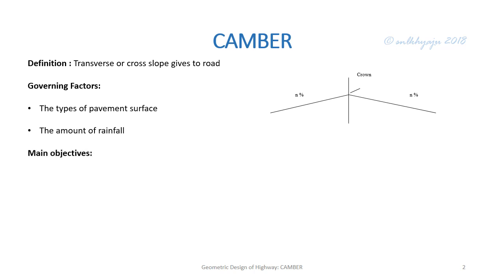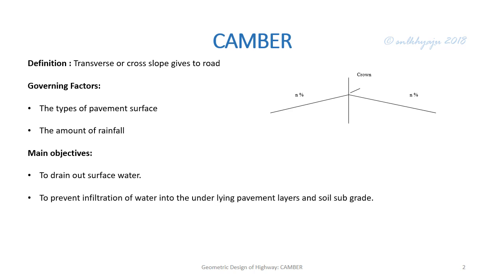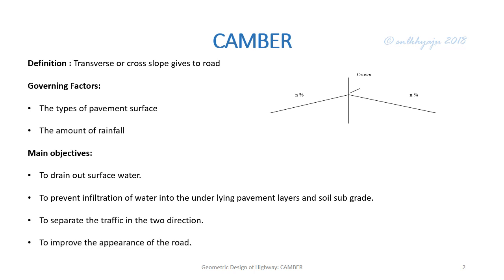The main objectives of camber are: first, to drain out surface water — that is rainwater — laterally; second, to prevent infiltration of water into the underlying pavement layers and subgrade soil; third, to separate traffic in opposite directions; and fourth, to improve the appearance of the road.